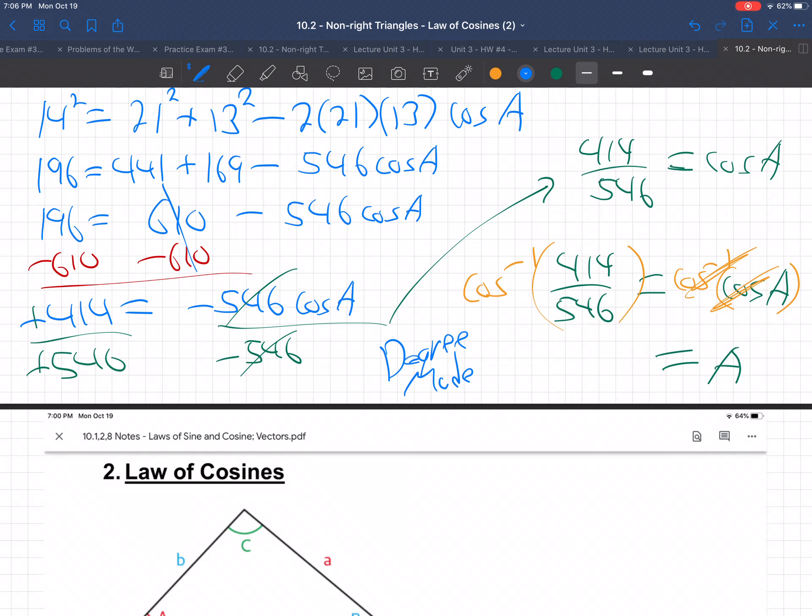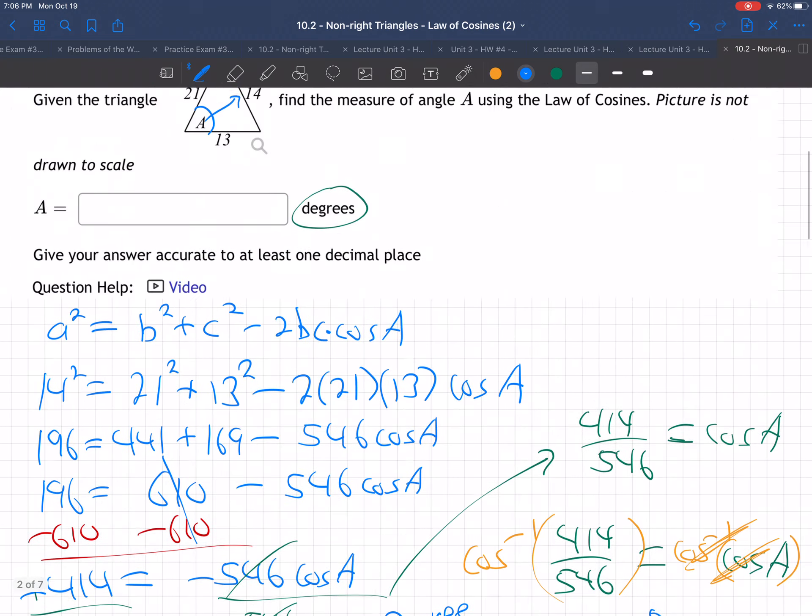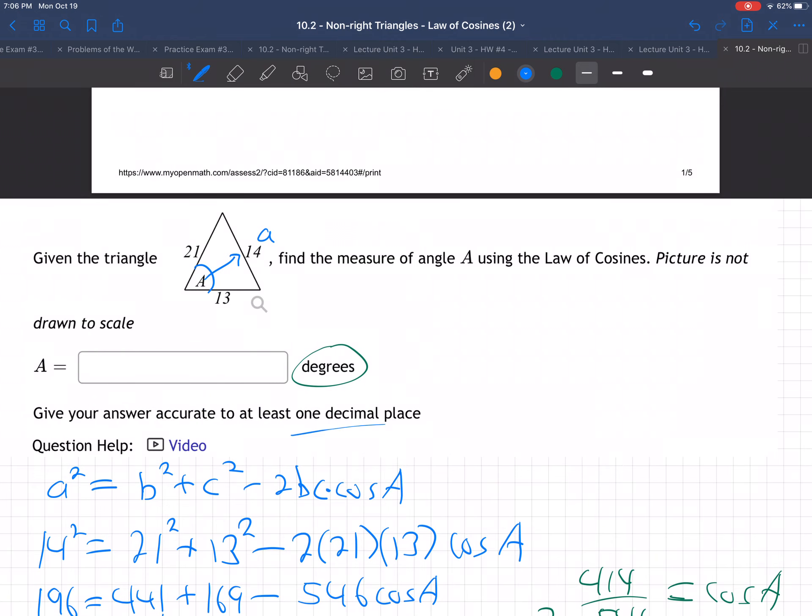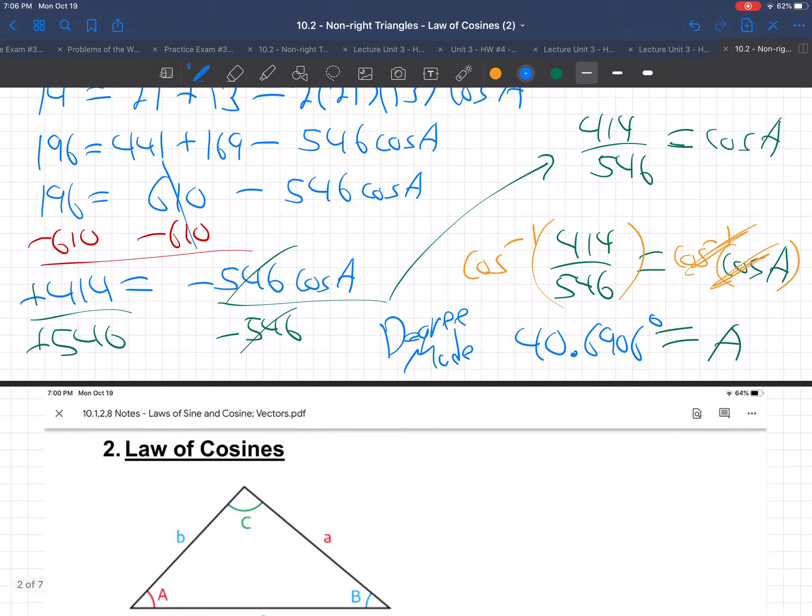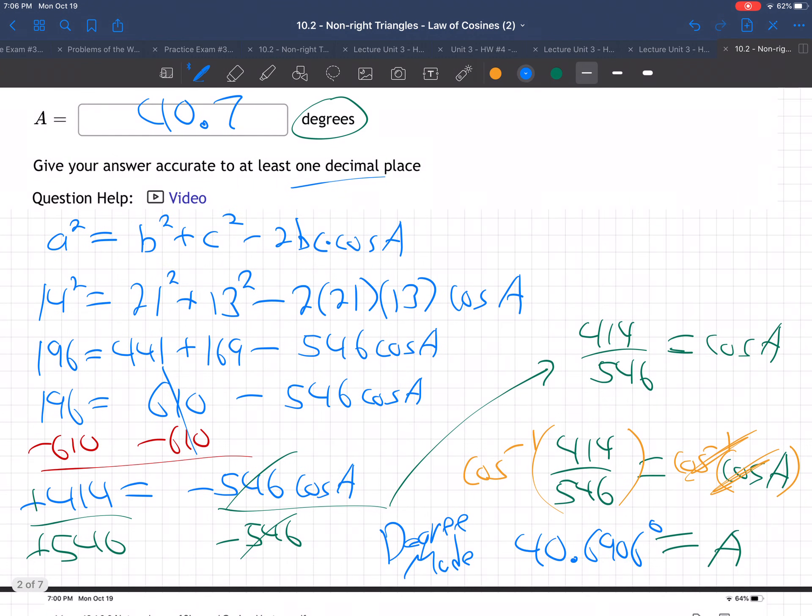Cosine inverse, 414 divided by 546. I'm getting 40.6906 degrees. I rounded 566. How many? Well, just one decimal place. Okay, so it's 40.7 degrees. Well, they already have the degree word there. 40.7. 40.7 degrees. So there's how we do it, using the law of cosine.